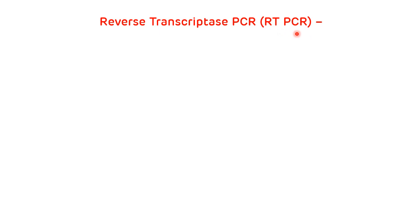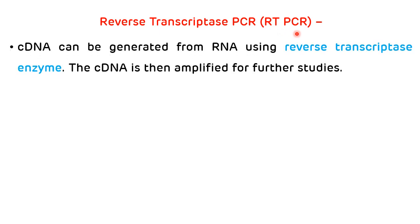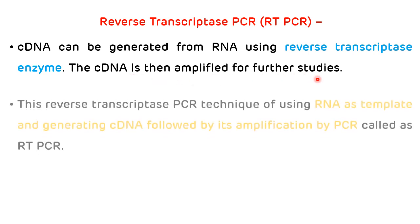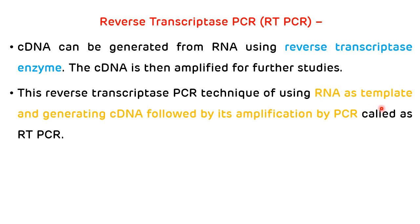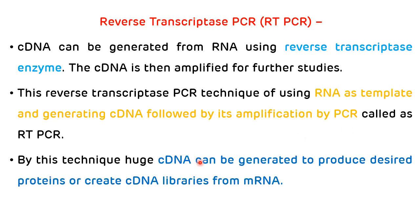The first and important type of PCR is reverse transcriptase PCR, also known as RT-PCR. A complementary copy of DNA can be generated from RNA using the reverse transcriptase enzyme, which is normally present in retroviruses, for example HIV. The complementary DNA is then amplified for further studies. By this technique, large cDNA libraries can be generated to produce desired proteins or to create cDNA libraries from messenger RNA.